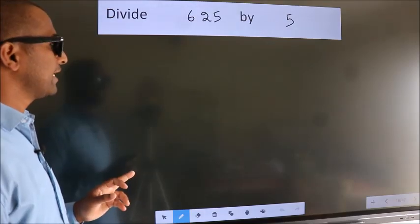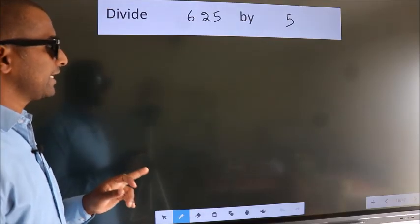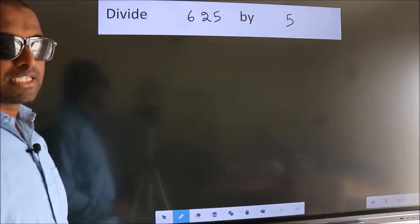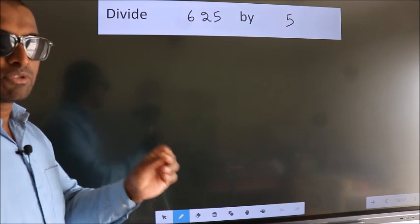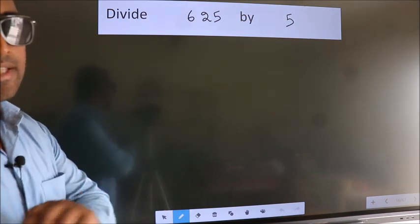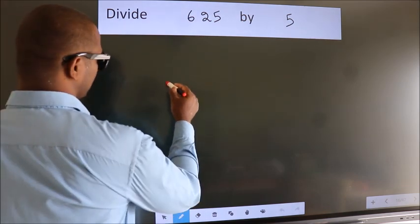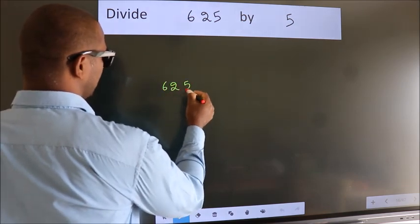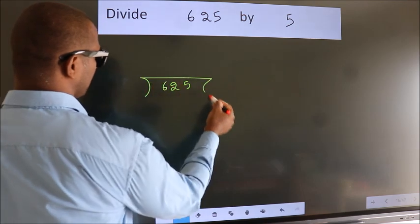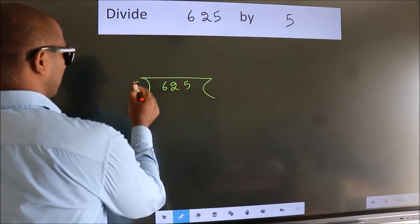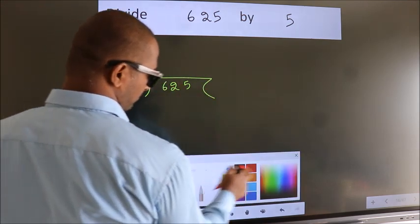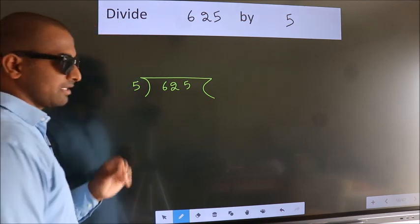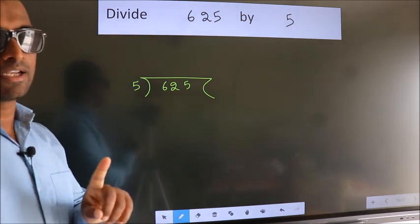Divide 625 by 5. To do this division, we should frame it in this way — 625 here, 5 here. This is your step 1.